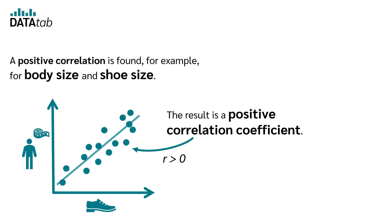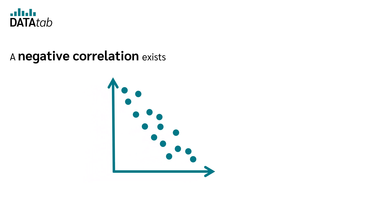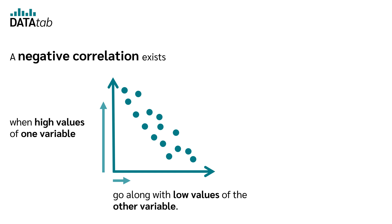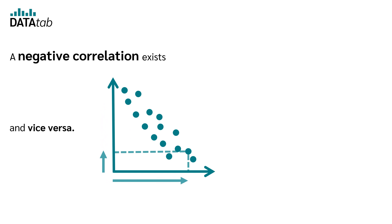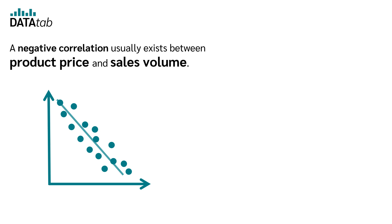The result is a positive correlation coefficient. A negative correlation exists when high values of one variable go along with low values of the other variable, and vice versa. A negative correlation usually exists between product price and sales volume.